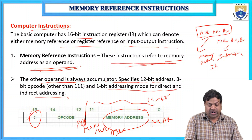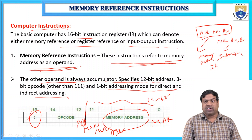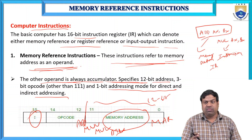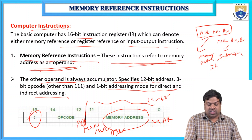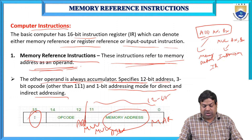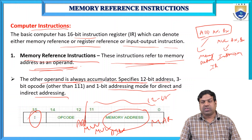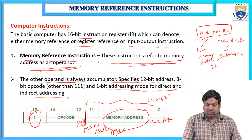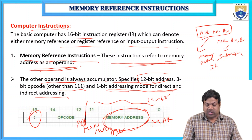Bit 15 is the 1-bit addressing mode for direct or indirect addressing mode. Direct addressing mode means we directly define the address and data. Indirect means we give one address, and the data is at that address — that is indirect addressing. So any memory reference instruction has a 12-bit memory address, a 3-bit opcode, and a 1-bit mode for direct and indirect addressing.